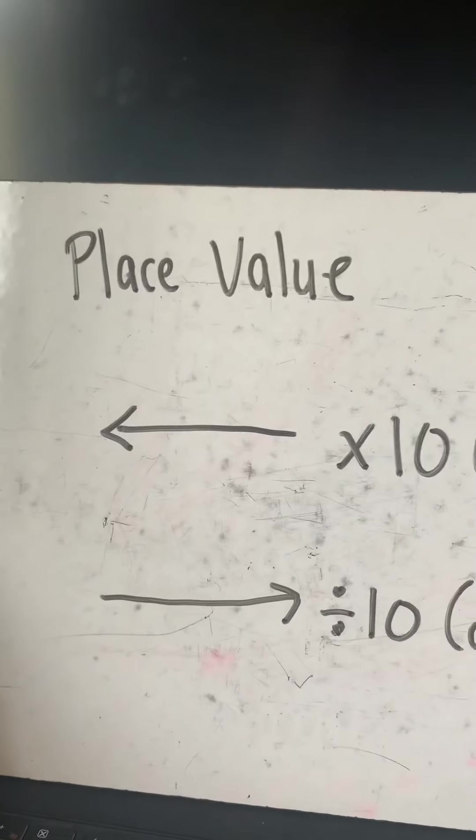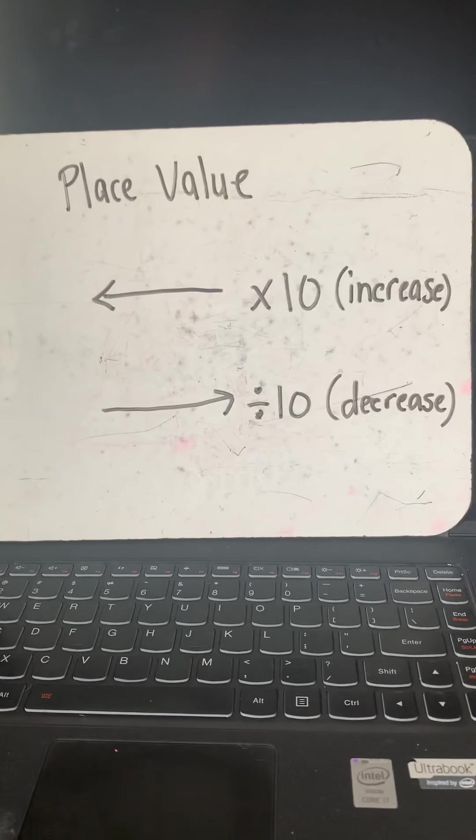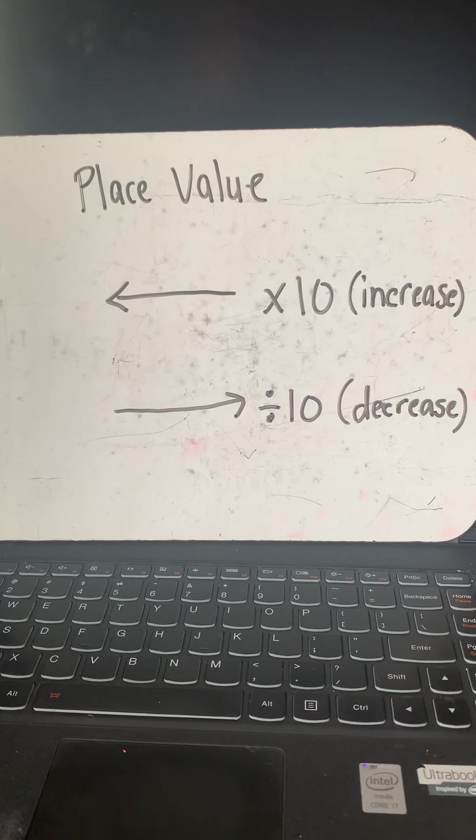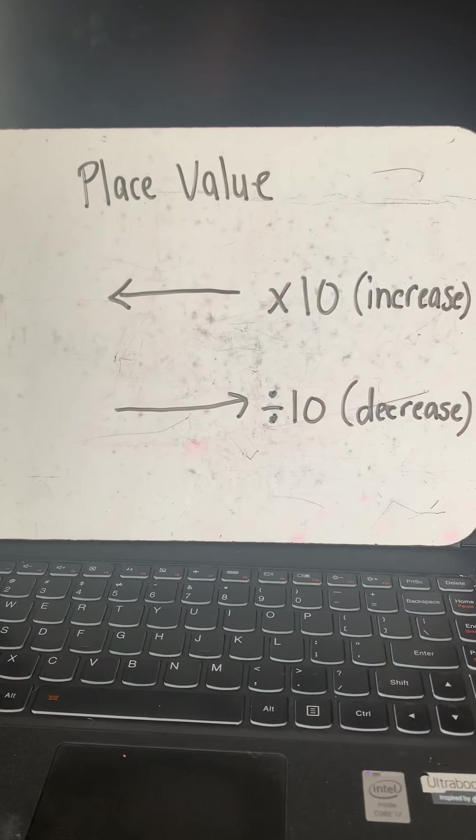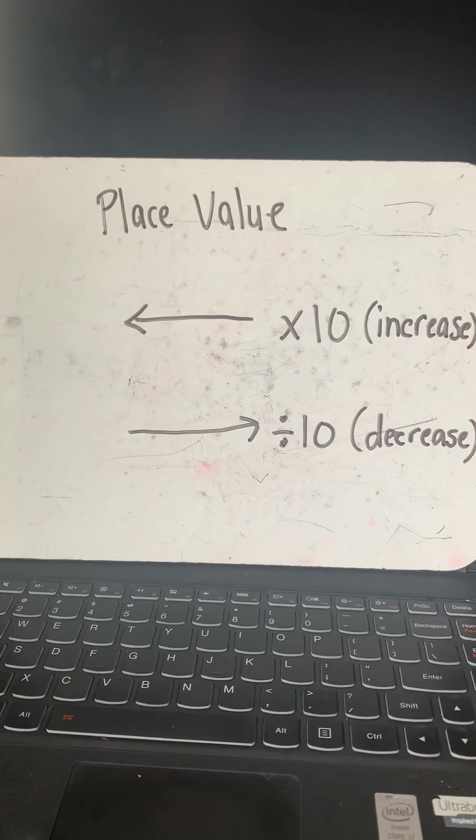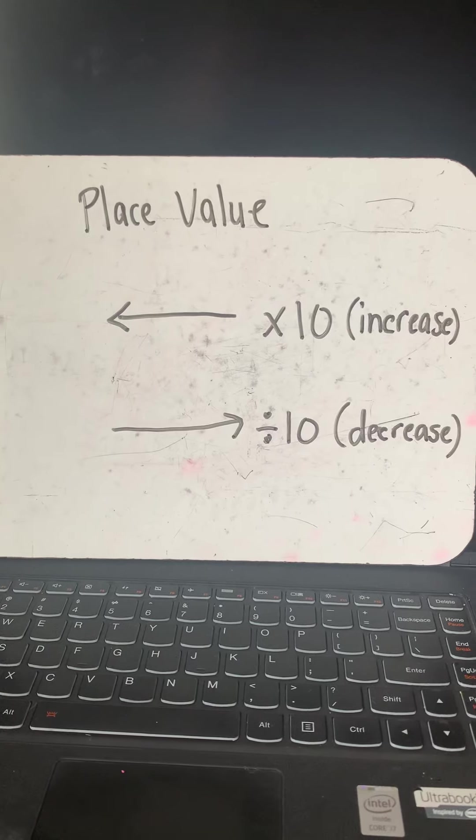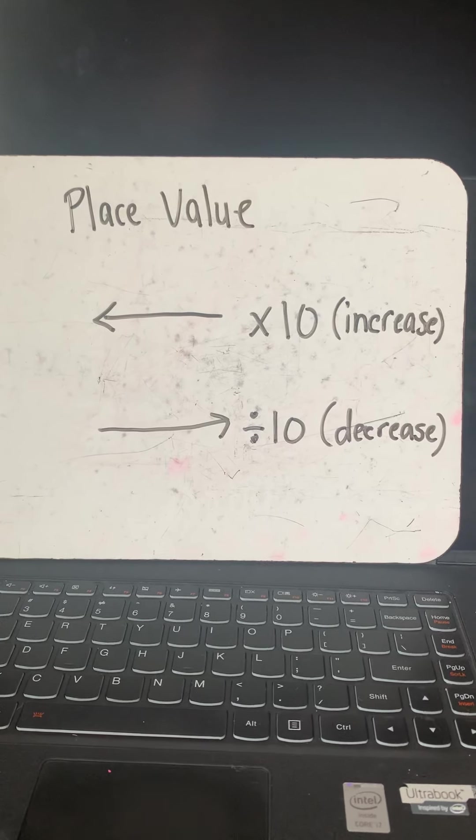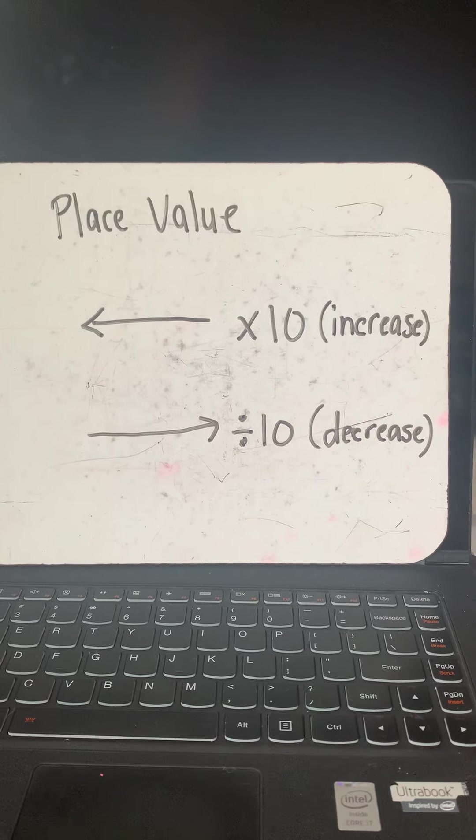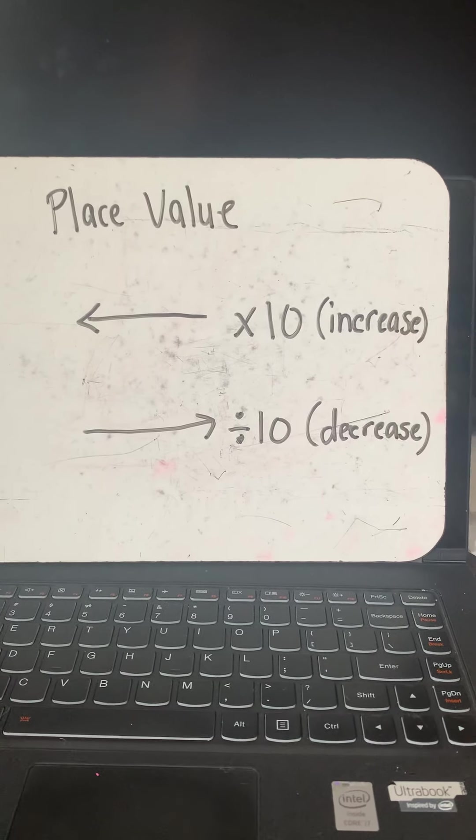So to begin this lesson, I just want to review with you guys place value. This is going back to what you guys have been learning at the beginning of fourth grade. We definitely talked about this. I know you've talked about it in earlier years. But let's review what we know about place value. So when I say place value, hopefully things like ones, tens, hundreds, thousands, ten thousand, hopefully those type of words kind of stick out in your mind, because that's exactly what we're doing. We're talking about place value.